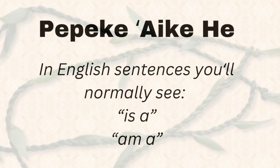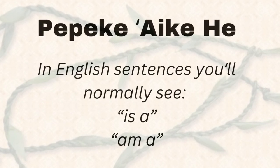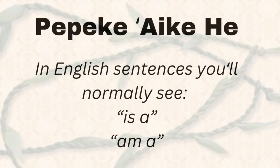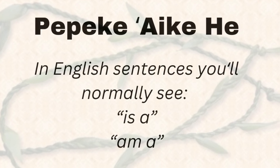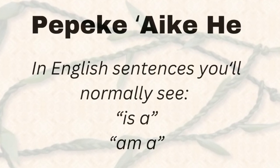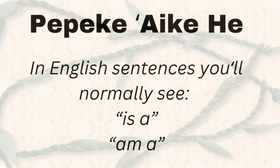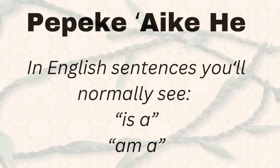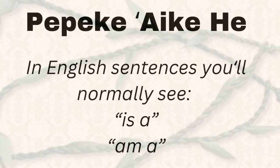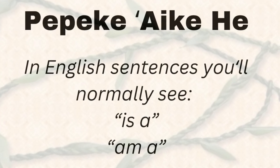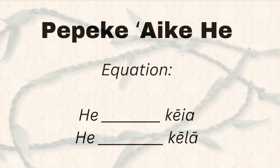You can remember that if we're using this sentence structure, usually in English it's going to have the words 'is a,' or if I'm trying to say 'I am a' — I am a wahine, I am a kumu, I am a whatever — insert surfer, insert whatever you are.